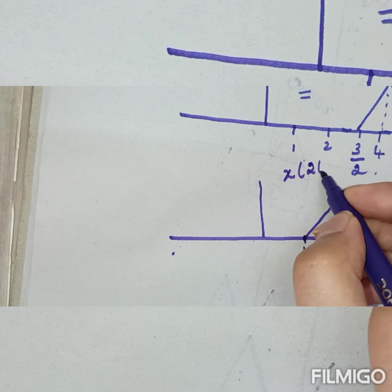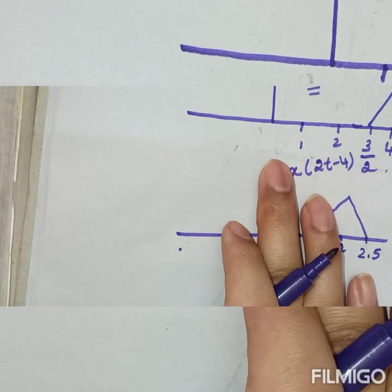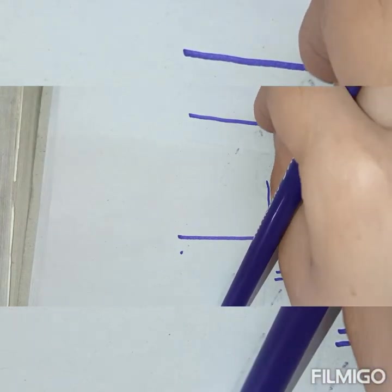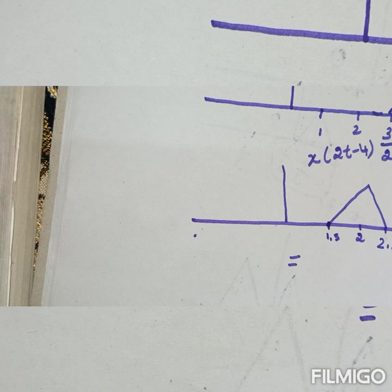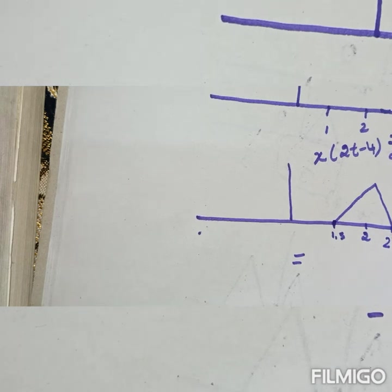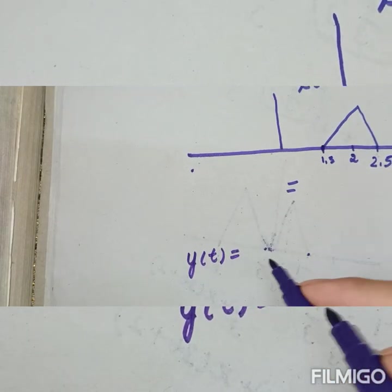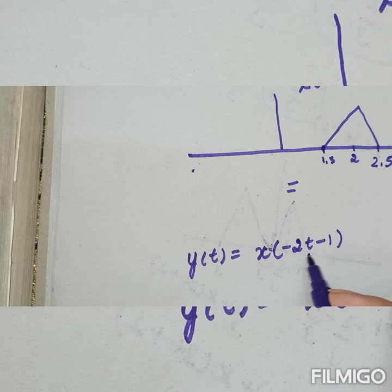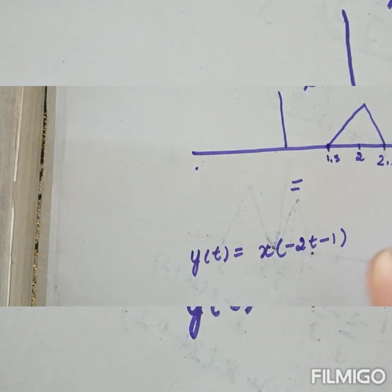So x of 2t minus 4 runs from 1.5 to 2.5. That is the resultant signal. Now for question number 4, using the same first signal x of t, we are asked to do the operation y of t equals x of minus 2t minus 1. This is a three-operation process: shifting, scaling, and reflection.